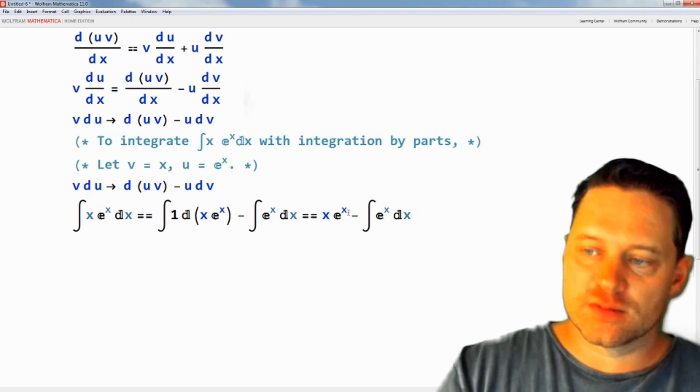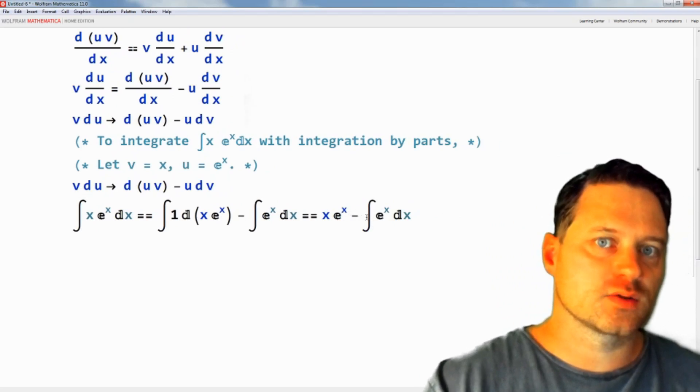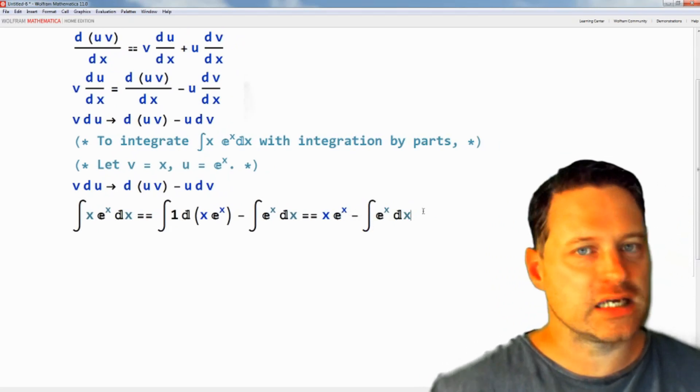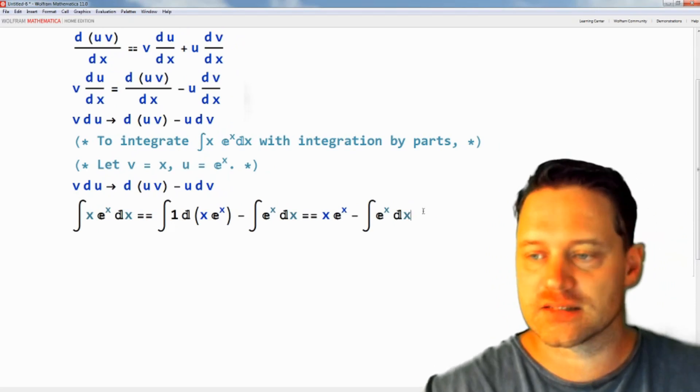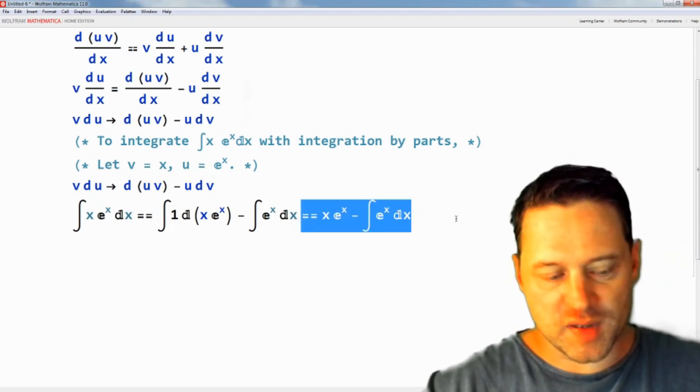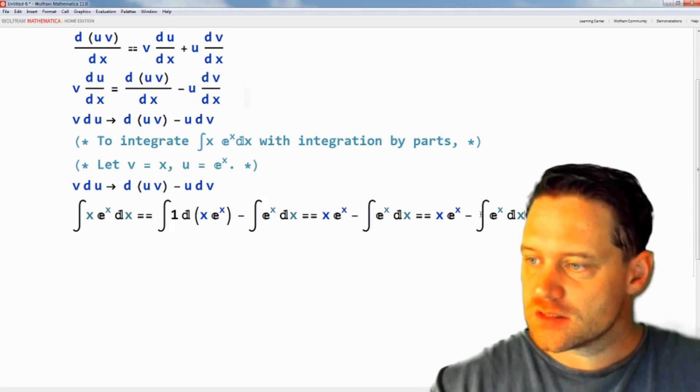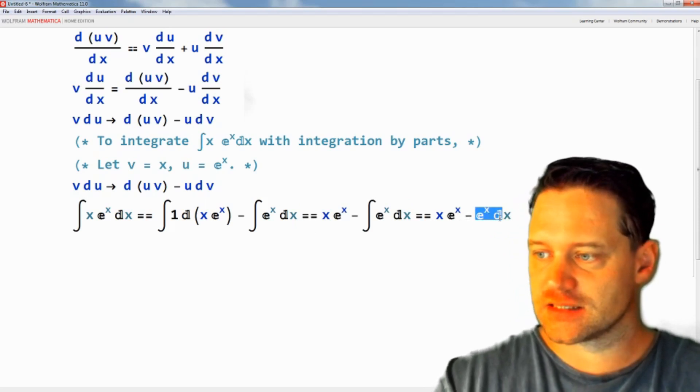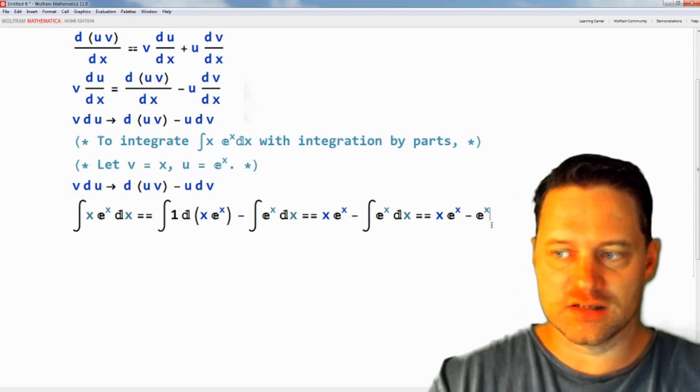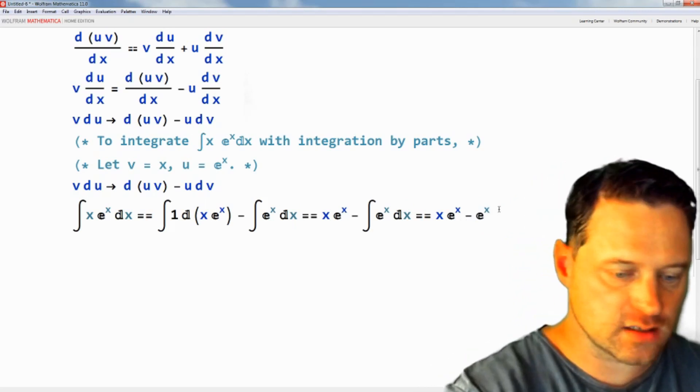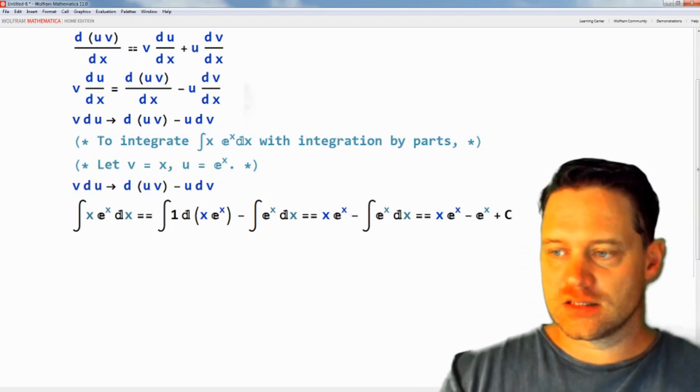Then we subtract the integral of e to the x with respect to x. That's a really easy integral, it's just e to the x. Let's copy this and simplify a little bit more. This integral is e to the x. Now that we are done integrating, we add plus c to say that any constant there would satisfy this equation.